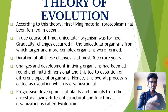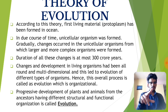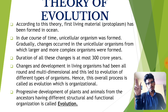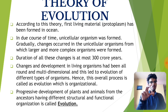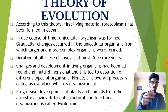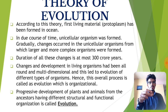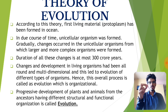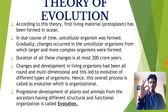To understand this — humans evolved from ancestors like apes, which are completely different in structure and function from current humans. Progressive development of plants and animals from ancestors having different structural and functional organization is called evolution.